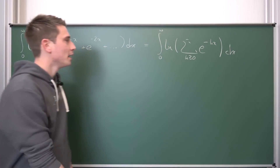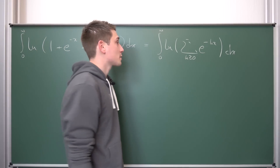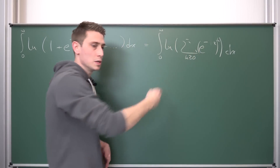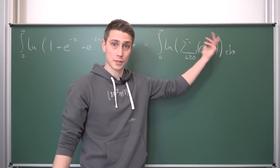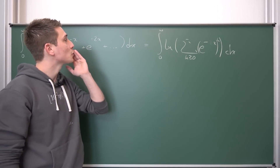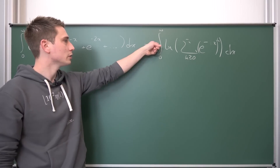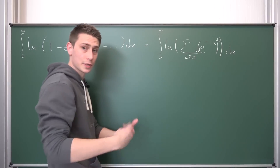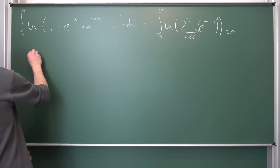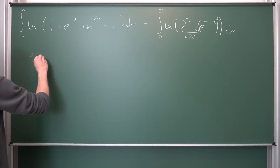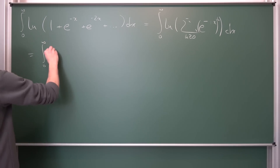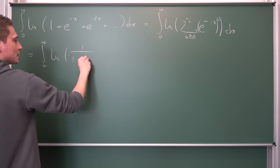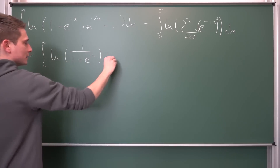Integrate with respect to x. It's quite obvious what it's going to be. This is e to the negative x to the kth power, and overall we have y to the kth power. So this is just a geometric series — it also converges on this interval — so we can put it into its closed form, basically its generating function. So this becomes the integral from 0 to infinity of the natural log of 1 over 1 minus e to the negative x, dx.